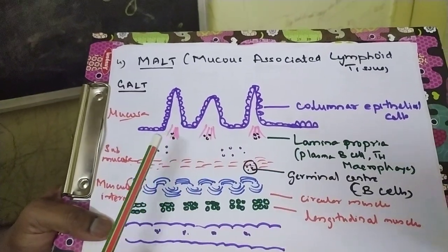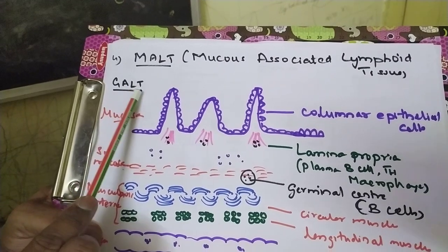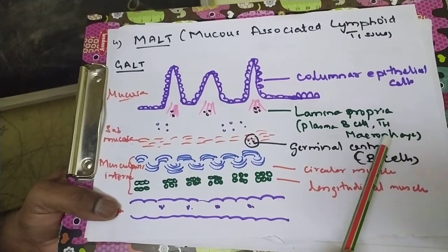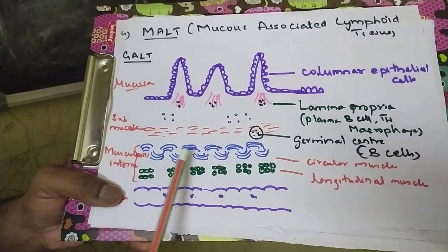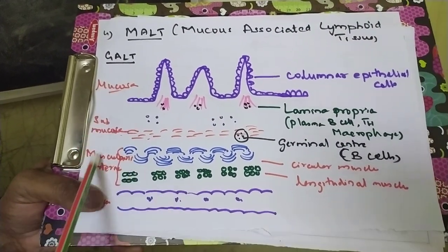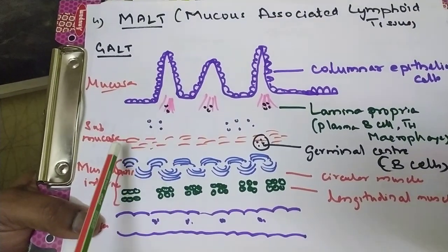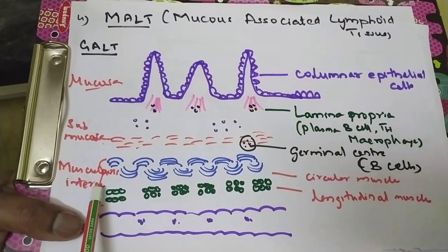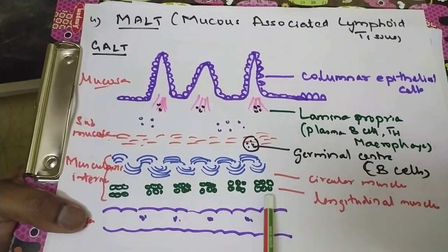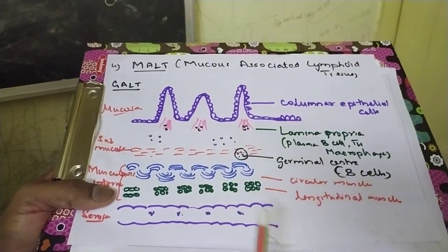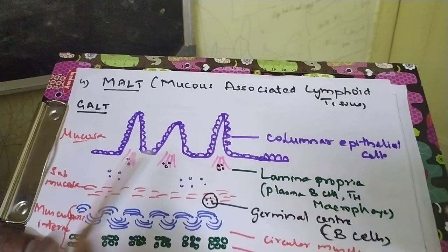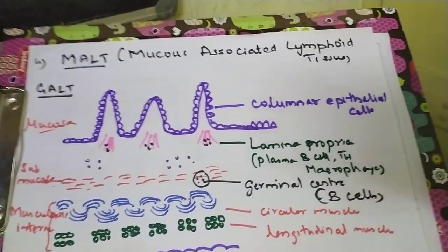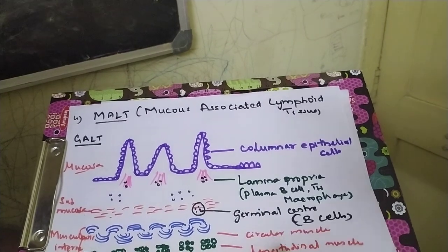MALT — mucus-associated lymphoid tissue — includes gut-associated lymphoid tissue as an example. In a section of the intestine, the villi and lamina propria contain plasma B cells, T helper cells, and macrophages, and a germinal center with B cells. The mucosa layer has B cells and T cells, and the submucosa has the germinal center. The inner layers are the muscularis interna with circular muscles, and the serosa. Since this is columnar epithelial cells, the gut-associated lymphoid tissue lodges plasma B cells, playing an important role whenever there is an intestinal infection.